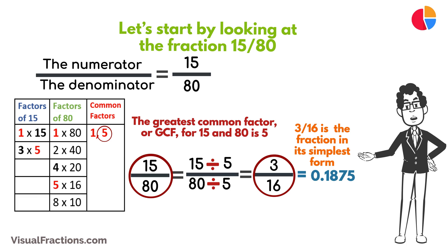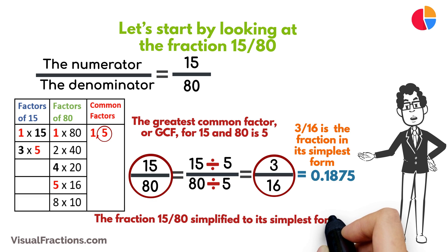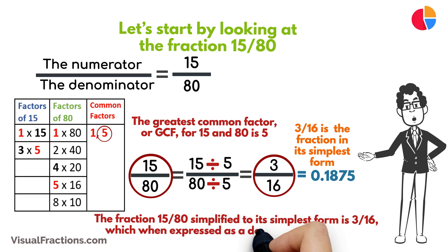So, there you have it. The fraction 15/80 simplified to its simplest form is 3/16, which when expressed as a decimal is about 0.1875.